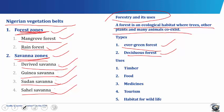Forests help to increase soil fertility in that the leaves and branches of forest trees which fall on the soil decay, forming humus which helps in improving soil fertility. Also, forests reduce evaporation of soil water in that the canopy of forest leaves reduces the impact of intense sunshine on the soil, thereby reducing evaporation of soil water.